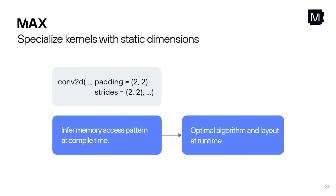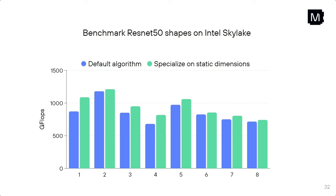This allows us to generate optimized kernels with the optimal algorithm using the optimal layout, and run that optimized kernel at runtime. Here is a simple benchmark using shapes from ResNet-50 models on an Intel Skylake processor. The blue bar shows the default convolution algorithm, and the green bar shows 20 to 30% improvement by specializing on the static dimensions to generate the optimal kernel.